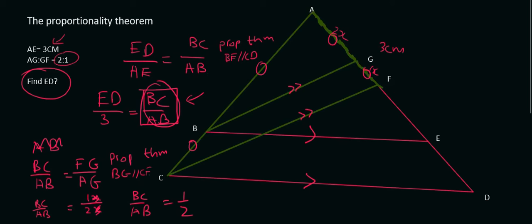Now that we have BC over AB, we can plug it back over here. So we can carry on with the question, which is ED over 3 was equal to BC over AB. But BC over AB is now 1 over 2. And so we can then do cross multiplication. And so we end up with ED is going to be equal to 1 over 2 times by 3. Therefore, ED is going to be equal to 3 over 2.